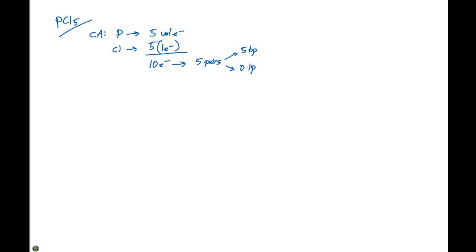If we have zero lone pairs, this means our electron domain geometry is going to equal our molecular geometry, which is going to equal a trigonal bipyramid.